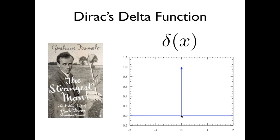With the exception of just one single point, x equals zero, where the function is somehow replaced by this arrow. This means that the function at that point takes an infinite amplitude, takes an infinite value.